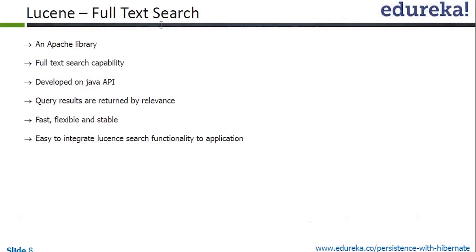Lucene is an index system. It's going to index whatever data has been provided. When you provide a large amount of data of different kinds — paragraphs or text — the best way to enable search is indexing. If you index something, if you know at point one this comes and at point two this comes, then only you can search it effectively. Lucene indexes any amount of data given by the user, whether from a file or a string, and provides search in a very fast manner.